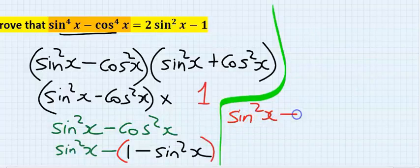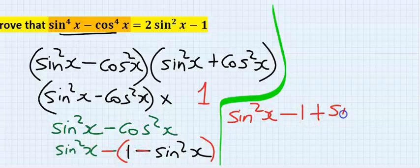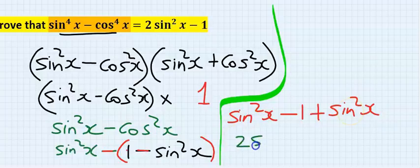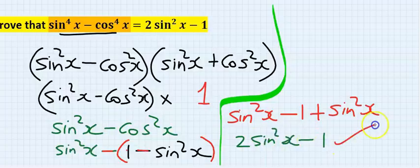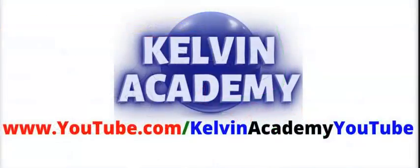So instead of cos squared x, we substitute (1 minus sine squared x). We then have sine squared x minus (1 minus sine squared x). The minus times minus becomes plus, giving sine squared x plus sine squared x, which equals two sine squared x, minus one. So we have achieved two sine squared x minus one.